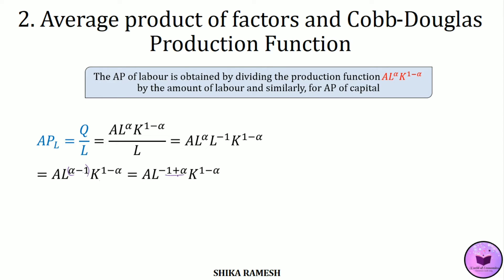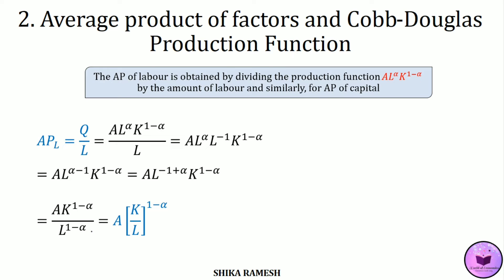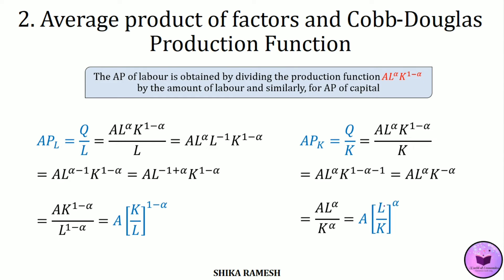Rewriting this as AL^(−1+α) K^(1−α) and bringing L^(−1+α) back to the denominator, we get AK^(1−α) / L^(1−α), which simplifies to A(K/L)^(1−α). Similarly, the average product of capital is found by dividing the Cobb-Douglas production function by K, giving A(L/K)^α.